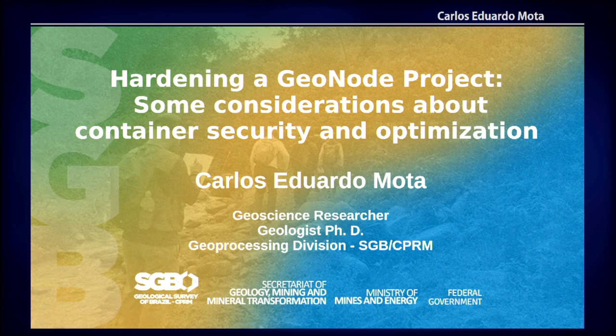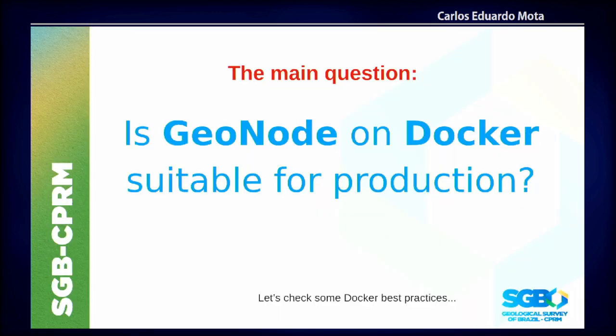Good morning. I will discuss here about some security holes that we found in the GeoNode project using version 3.3, and I will show some little bits of code and Docker files to show how it is not suitable for production yet. In five minutes I will try to address this problem. Is GeoNode on Docker suitable for production? In the GeoNode documentation there are some documents about how to put GeoNode in production, but some of the code and scripts inside the project have a lot of little problems, and I will show you some of them.